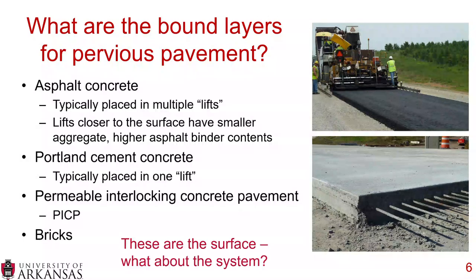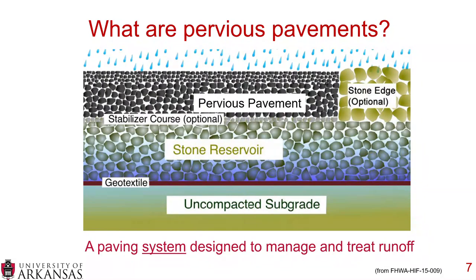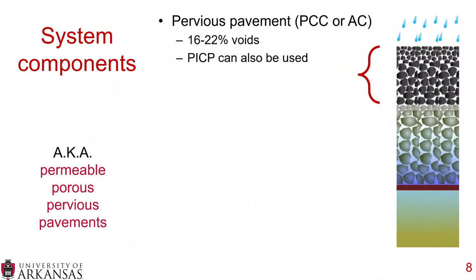An important part of pervious pavements is the system. When I look at the system of pervious pavements, we have a surface on top, a stabilizer course, a stone reservoir, a geotextile, and uncompacted subgrade at the bottom. Pervious pavements are a paving system designed to manage and treat runoff. The terms permeable, porous, and pervious pavements are often used interchangeably.